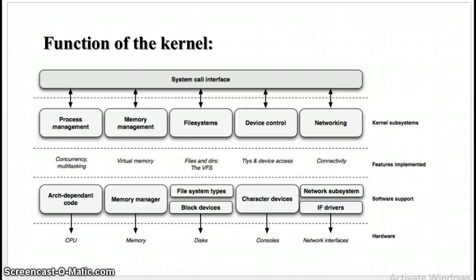Then next is the file system. Linux is heavily based on the file system concept. Almost everything in Linux can be treated as a file. The kernel builds a structured file system on top of the unstructured hardware. It also supports multiple file system types — for example, the Linux standard ext3 file system and the commonly used FAT file system.